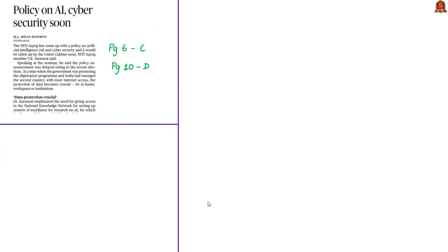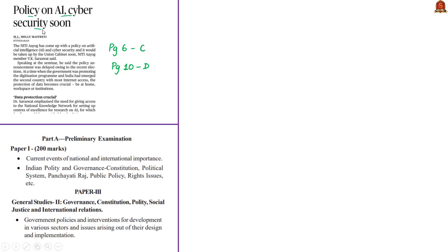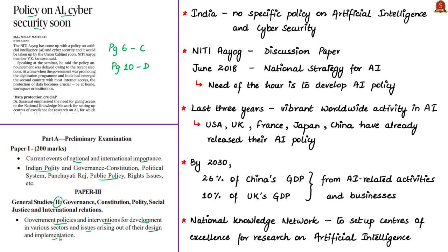The next news article is about having a policy for artificial intelligence and cyber security in India. This is relevant in the prelims under current events of national importance and public policy in Indian polity, and in mains under General Studies Paper 2 under government policies and interventions. Niti Aayog has come up with a policy on artificial intelligence and cyber security. Note that India does not have a specific national policy on artificial intelligence or on cyber security. Last year in June, Niti Aayog published a discussion paper on national strategy for artificial intelligence.